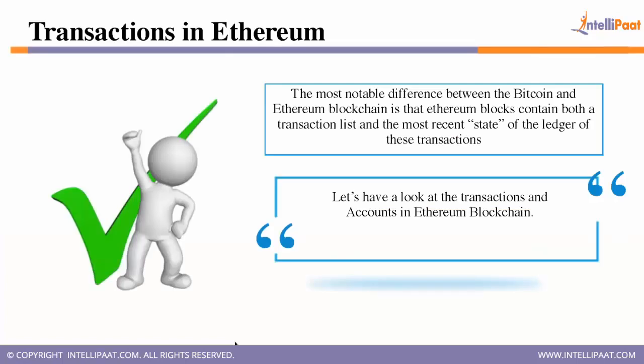The most notable difference between Bitcoin and Ethereum blockchain is that Ethereum blocks contain both a transaction list and the most recent state of the ledger. Let's have a look at transactions and accounts in the Ethereum blockchain.